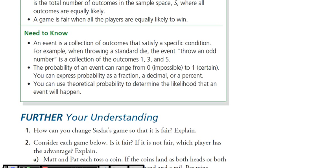You can use theoretical probability to determine the likelihood an event will happen. Can we do theoretical probability with cards, dice, coins? Sure — as long as it's a fair coin and the dice aren't weighted. In a casino the dice are clear so you can see through them and know they're not weighted. They want it to be a fair game — they're going to win anyway, but they want it to be fair.